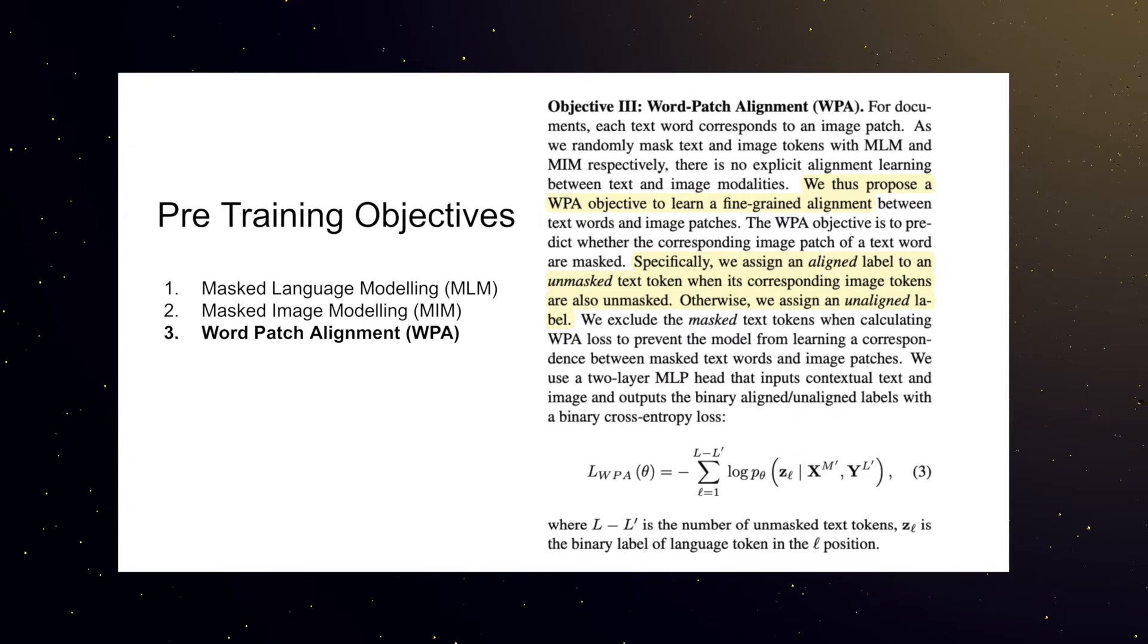And then we have something slightly newer which is called word patch alignment. Now word patch alignment is about finding the alignment of image and text correctly. This is essentially a binary classification problem where they teach the model to find the connection of image to text. This is done by assigning a label to masked image and masked text pairs to see if they can predict that using binary cross-entropy loss.